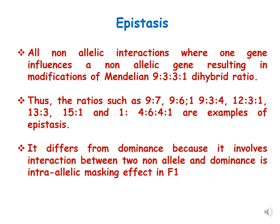What is epistasis? Epistasis refers to all non-allelic interactions where one gene influences a non-allelic gene, resulting in modifications of the Mendelian 9:3:3:1 dihybrid ratio. This means that all modified dihybrid ratios come under epistasis.